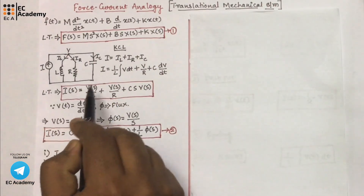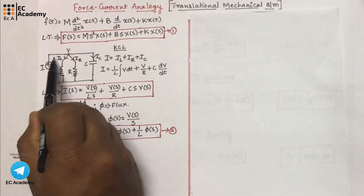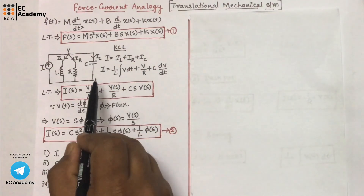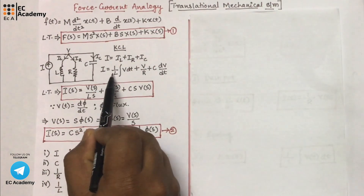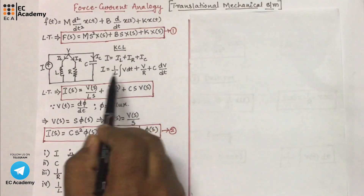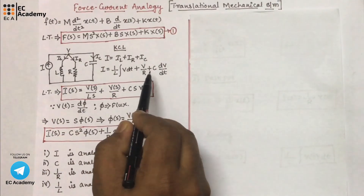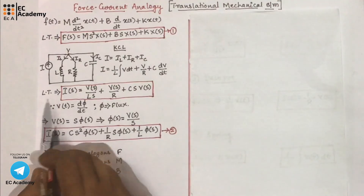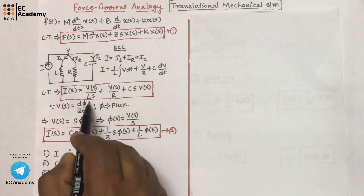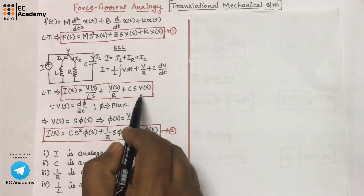Let us consider an electrical network. For this electrical network, let us apply Kirchhoff's current law. We can say I = I_L + I_R + I_C. We can write the equation as I = (1/L)∫V dt + V/R + C·dV/dt. Applying Laplace transform, we get I(s) = V(s)/Ls + V(s)/R + Cs·V(s).